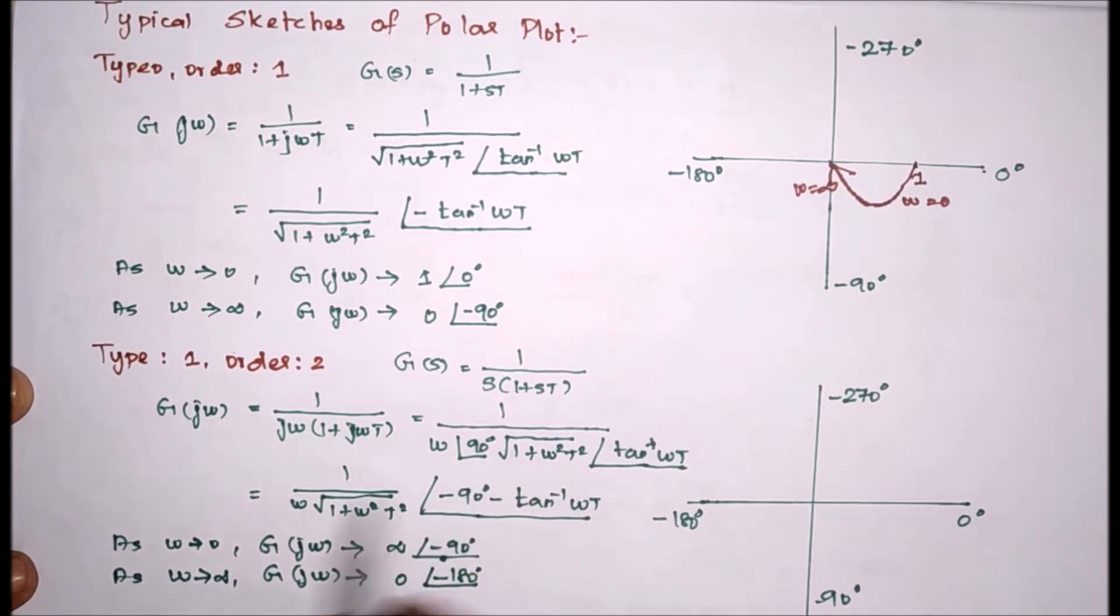So this is the magnitude angle. This angle and this angle both are in the denominator. If we take this into numerator we have to, it will become minus. Therefore instead of plus 90 here it will become minus 90. Then instead of plus tan inverse of omega t, it will become minus tan inverse of omega t.